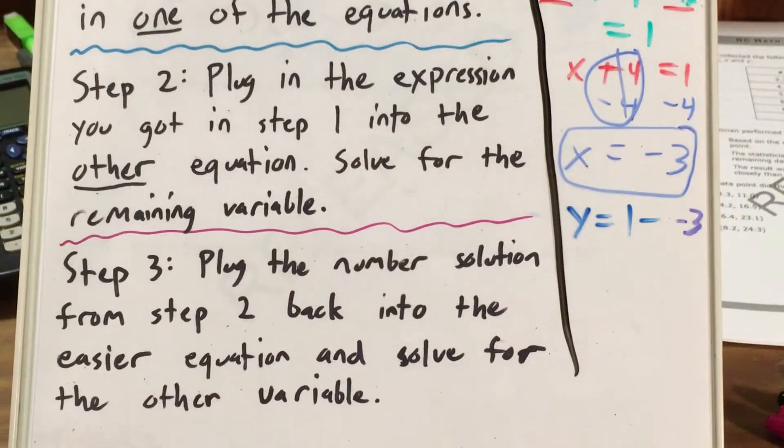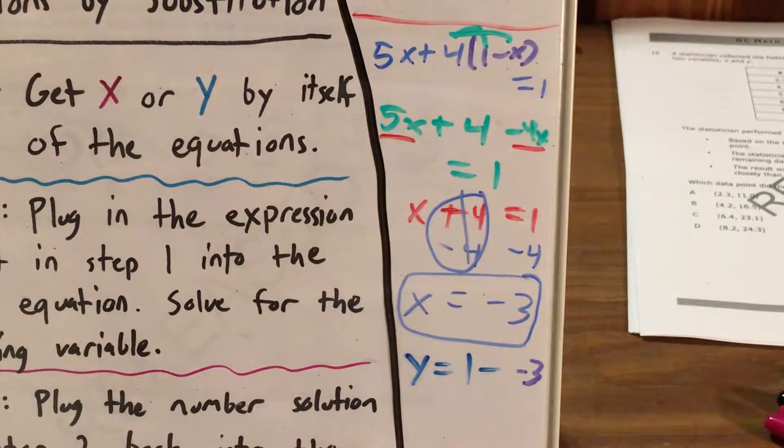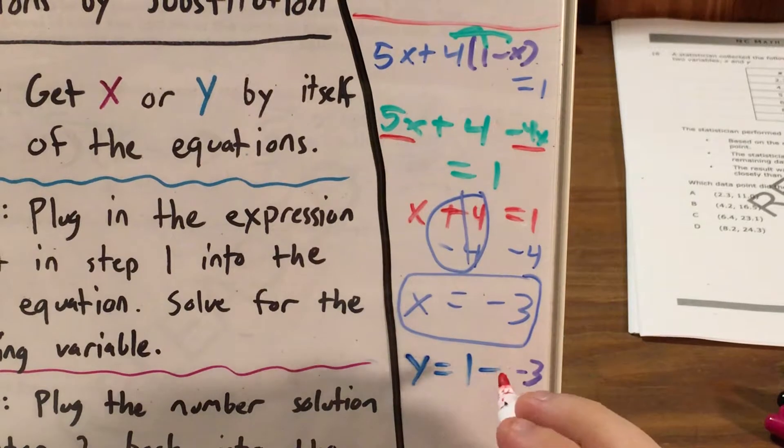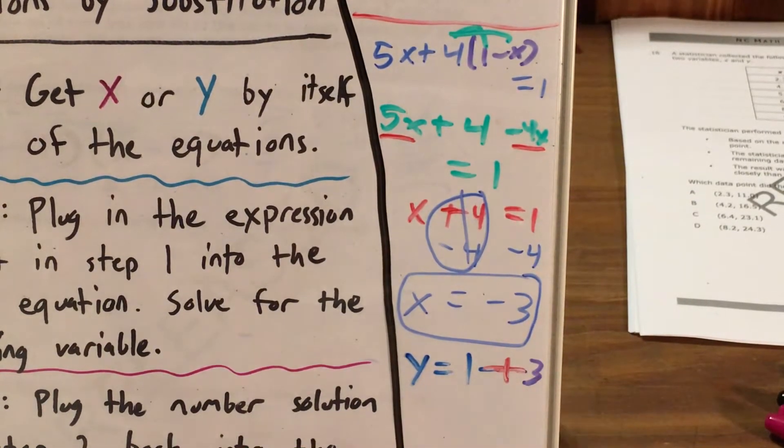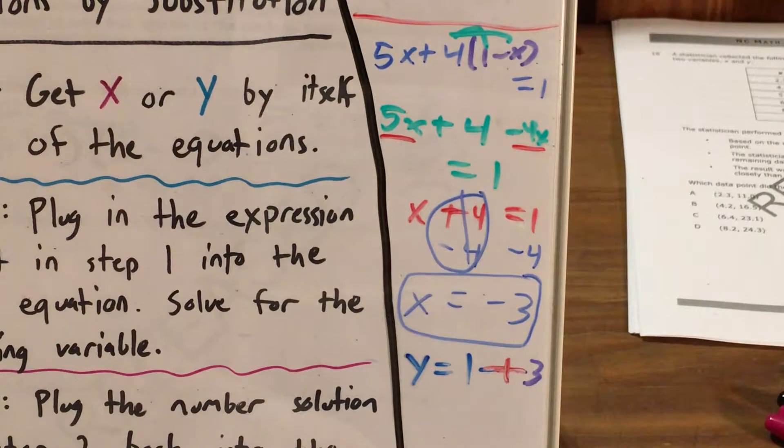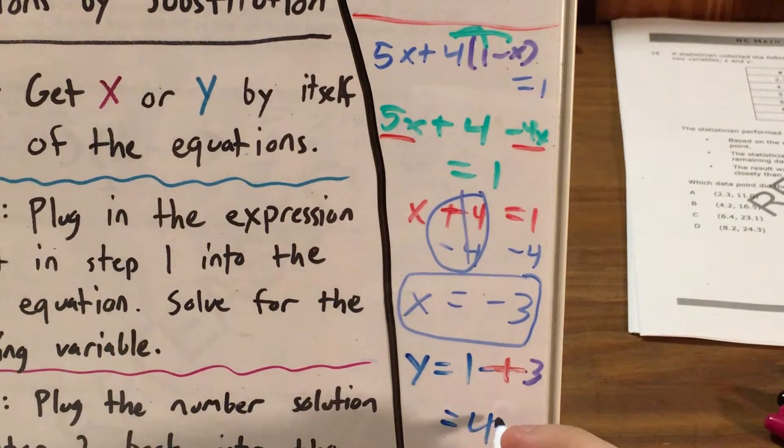And now, all I'm trying to do is solve for the other variable, solve for y. And at this point, I've narrowed it down to just the arithmetic expression 1 minus negative 3. And if I recall, I can take these two negative signs and put them on top of each other to make a plus sign, because two negatives do make a positive, which gives me y equals 1 plus 3, or 4.